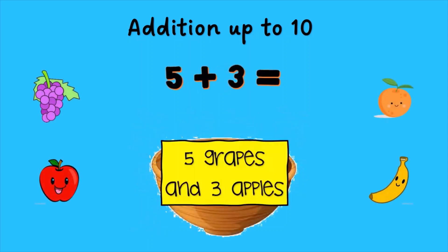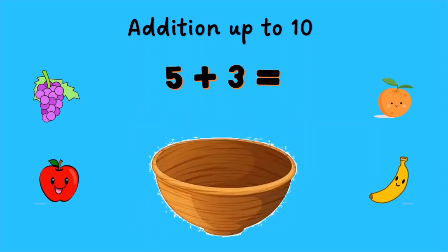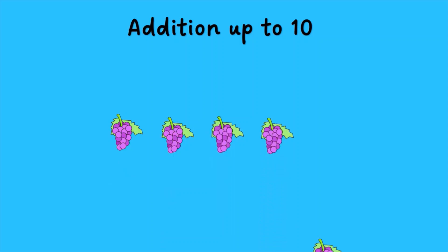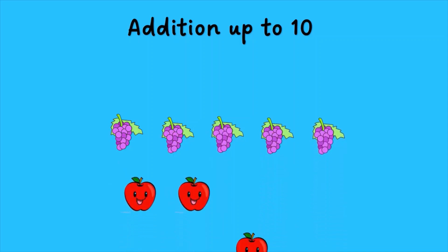Five grapes and three apples. One, two, three, four, five, six, seven, eight. The sum is eight.